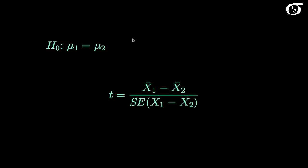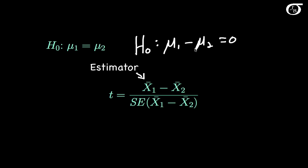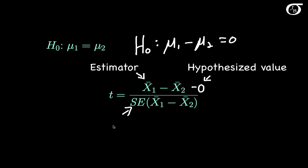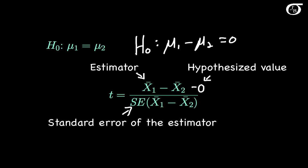Our null hypothesis can be written as mu1 minus mu2 equals 0. When constructing the test statistic, we take the estimator of mu1 minus mu2 and subtract the hypothesized value — which is 0, so we can omit it — then divide by the standard error of the estimator. If we wanted to test that the difference equals a different value, like 3, we would subtract that value in the numerator. But in practice, the most common situation is testing that the population means are equal, so we typically leave this part out.